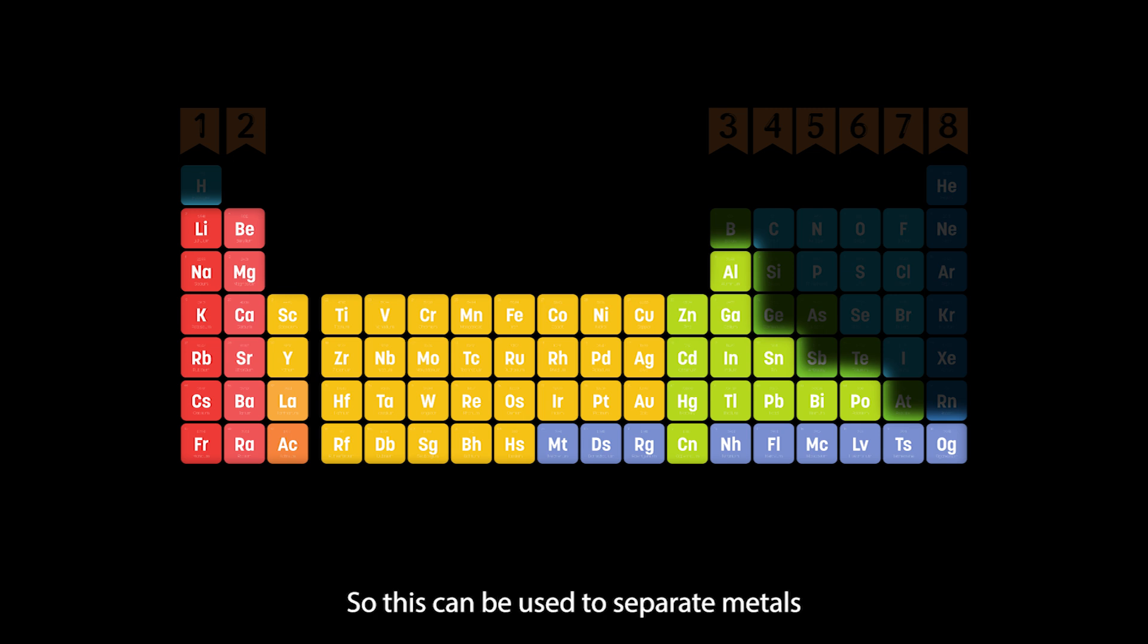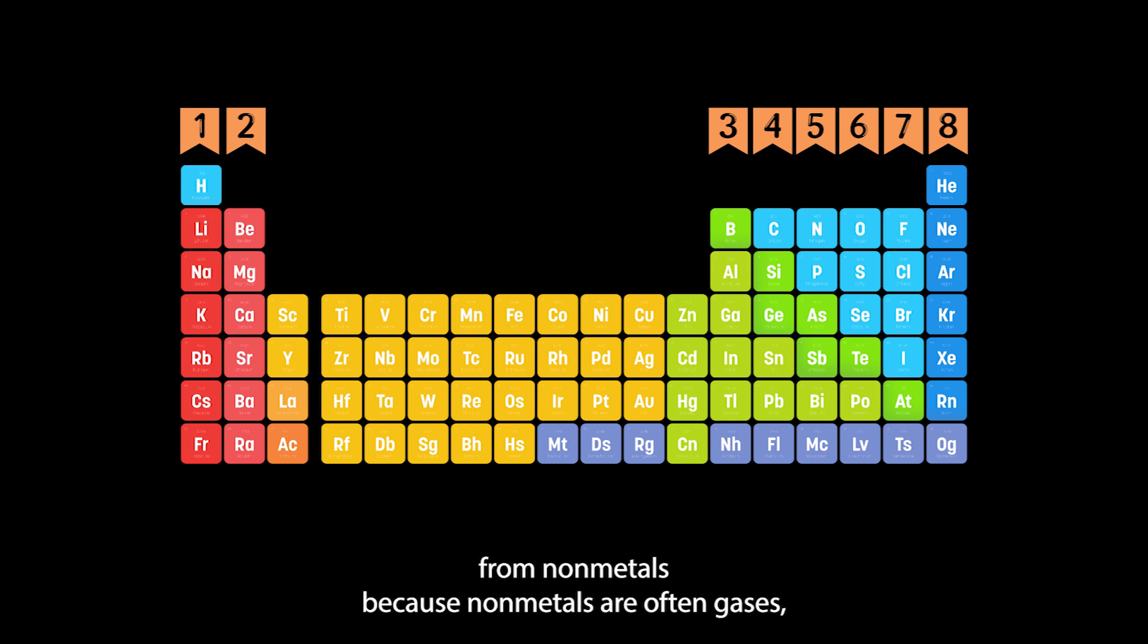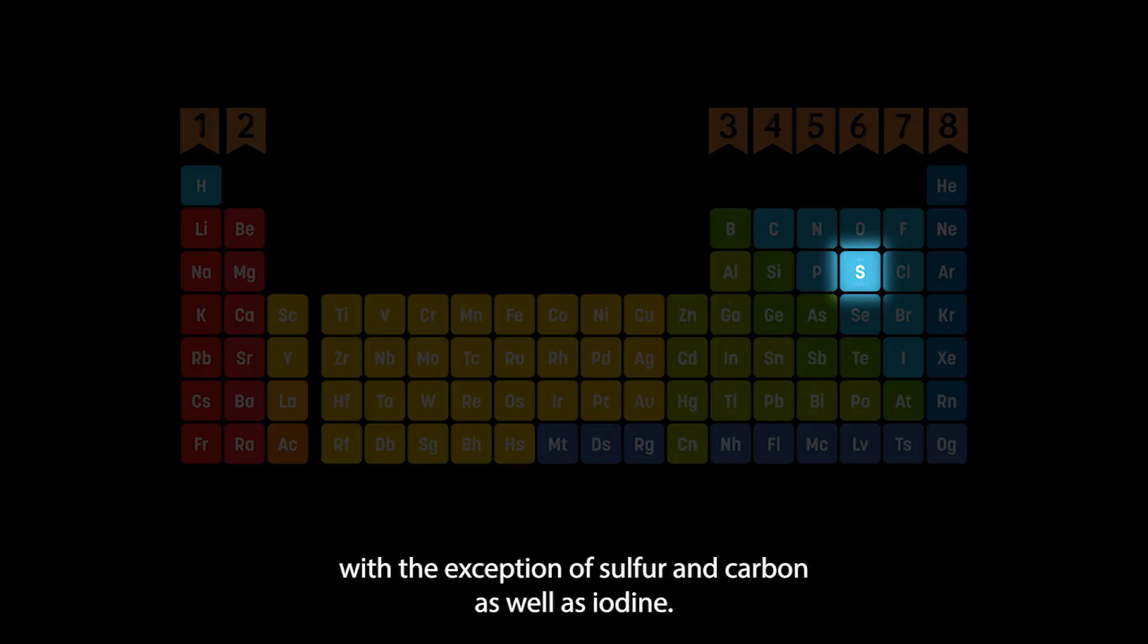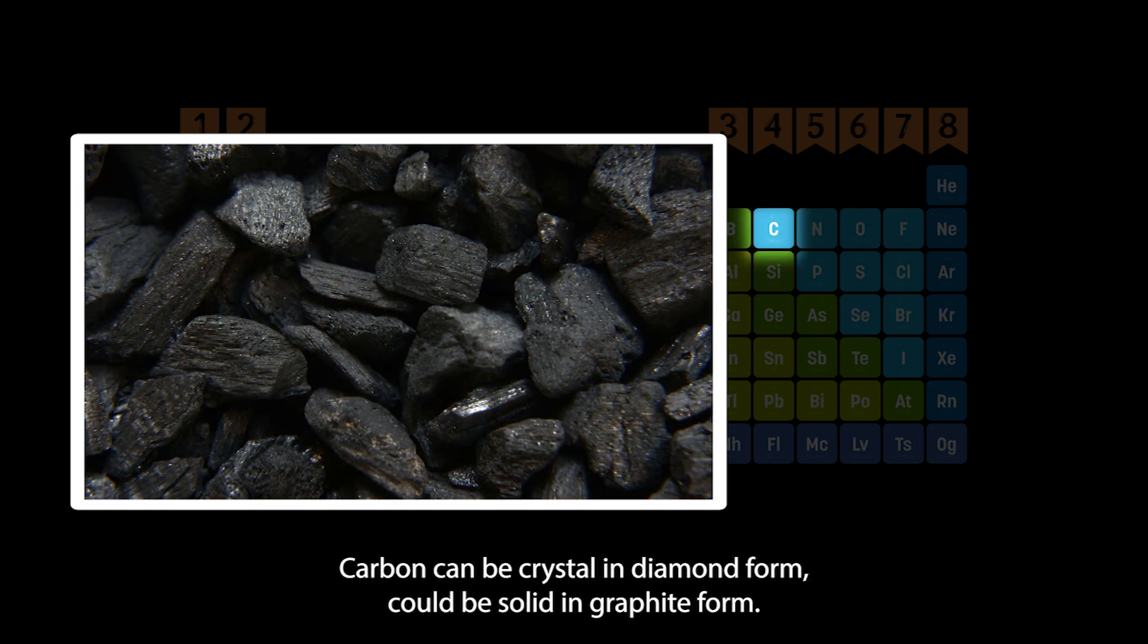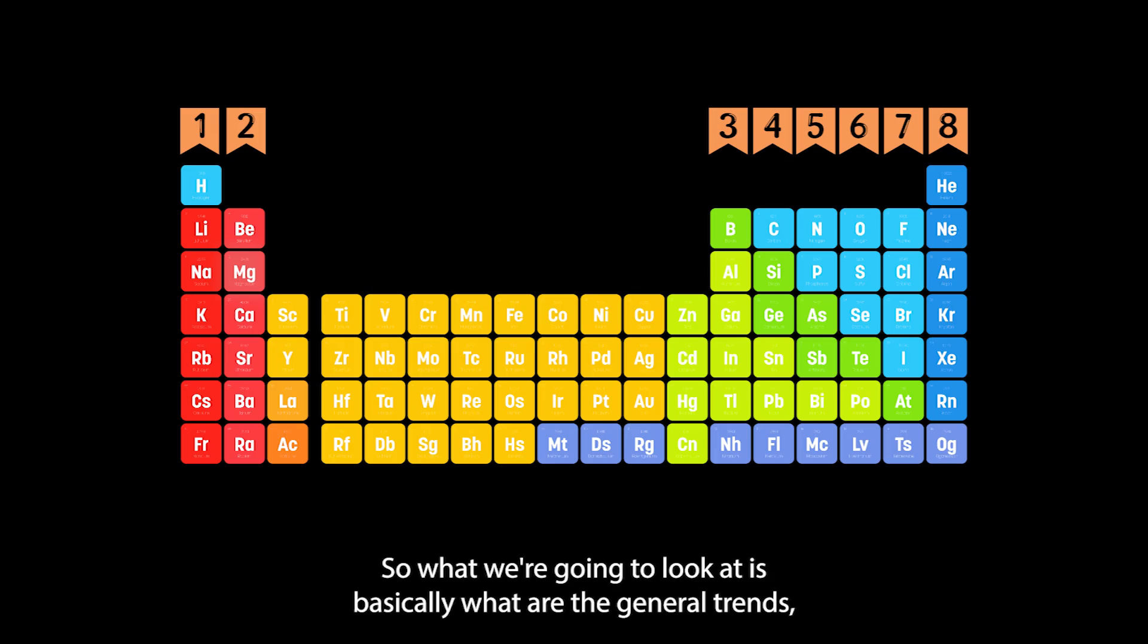If we found lots of different elements and these elements were solid, we would probably think of them as metals. This can be used to separate metals from non-metals because non-metals are often gases with the exception of sulfur and carbon as well as iodine. Iodine is crystal, sulfur is crystal, carbon can be crystal in diamond form or solid in graphite form.